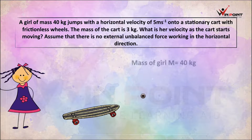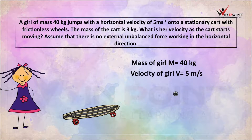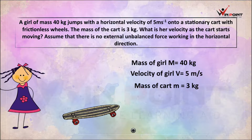Now we can write the given values: mass of girl m = 40 kg, velocity of girl v = 5 m/s, mass of cart M = 3 kg. After the girl jumps onto the cart, the cart and girl move with the same velocity together. We need to find the velocity of the girl and cart together.